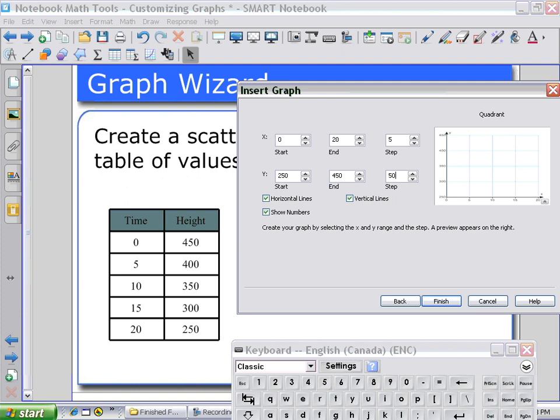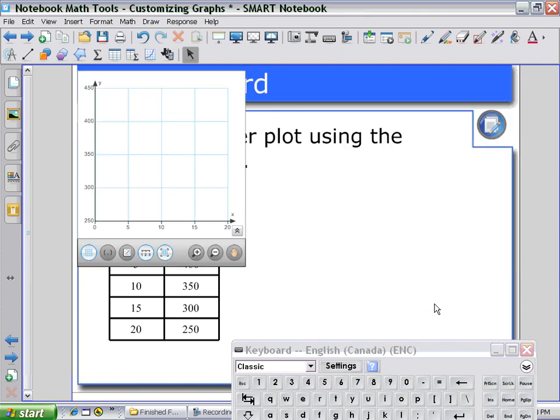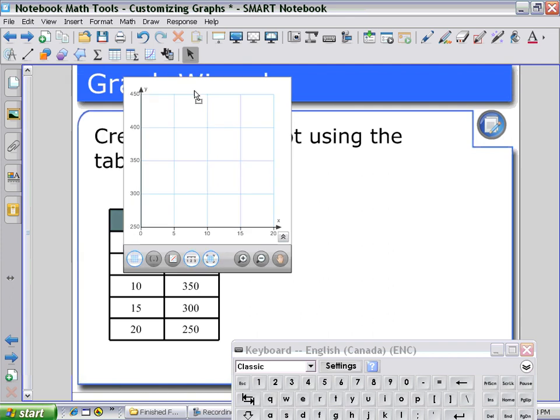Again, it's previewed on the right. And when I'm satisfied, I select finish. And then that grid appears where I can move it onto my workspace.